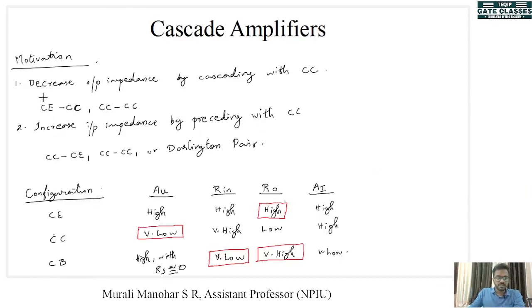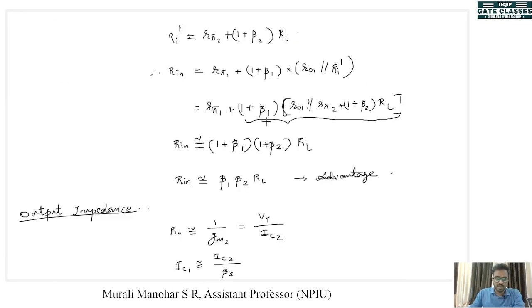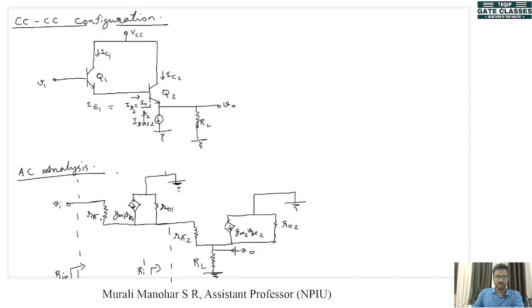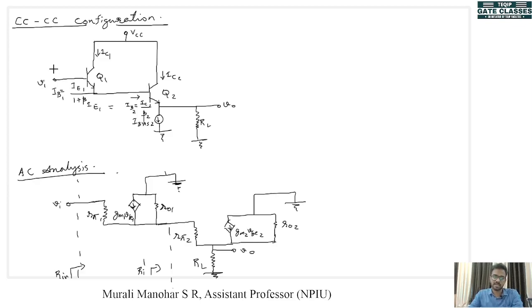We already know our aim is to decrease the output impedance by cascading with CC. If we want a small output impedance, the value of Ic2 must be large. Since Ie1 = Ic2/β2, to support a larger collector current in the second transistor, we only need a very small base current in the first transistor.